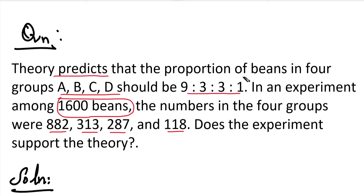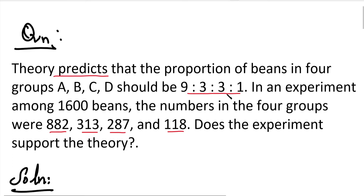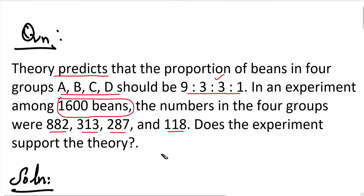The theory predicts that the proportion of beans in four groups should be in the ratio 9 is to 3 is to 3 is to 1. They expect this ratio. In this problem, since we have sample size, mean, variance, and standard deviation — and because we are given a ratio — this will be a chi-square test problem. The observed frequency is O, and the expected frequency is E.